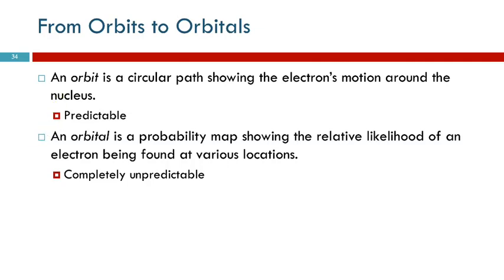An orbital describes this area where it is likely that you would find the electron. But it is completely unpredictable. You can't say the electron's going to be over here. You can just say it's within this big volume, but you can't say where it's going to be. It bothers me.